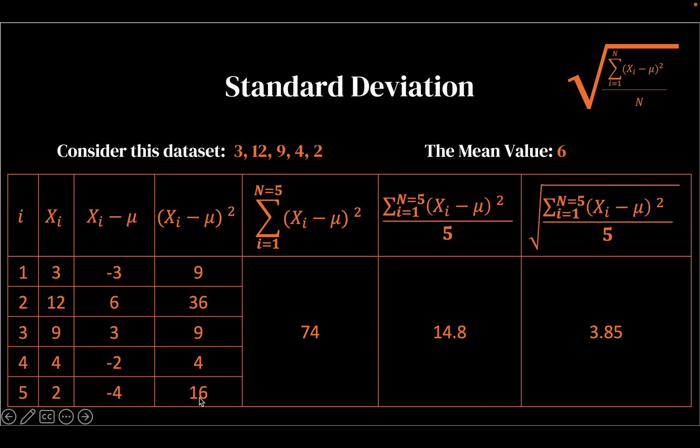And then all of these values get summed up to get a total value. And then we divide it by the number of values, which are five in our case, to arrive at this quantity which is something that we are going to square root. And we would arrive at our standard deviation value, which is 3.85.